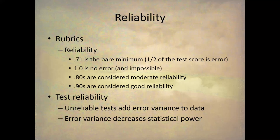A reliability in the 0.8s is considered a moderate level of reliability, and in the 0.9s is considered a good level of reliability. I recently designed a test and the Cronbach's Alpha was 0.91, and I was very happy with that. Unreliable tests add error variance to the data, and error variance decreases statistical power, which we'll talk about later when we discuss statistical conclusion validity.